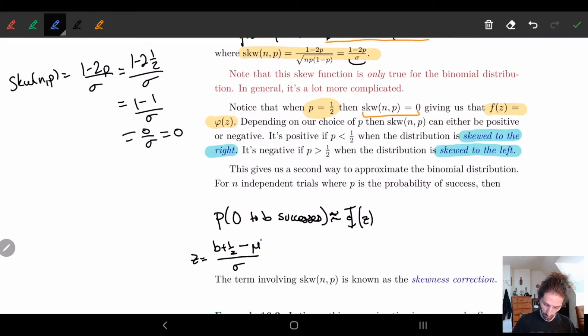Here μ, remember, is equal to np and σ is equal to square root of np(1-p). So we have the b part and now we need the a part is zero, but we're going to add the correction factor.